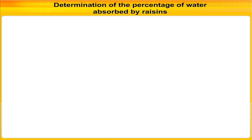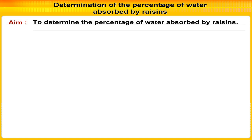Experiment 12: Determination of the Percentage of Water Absorbed by Raisins. Aim: To determine the percentage of water absorbed by raisins.